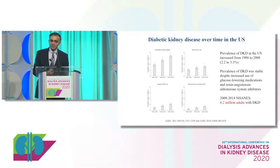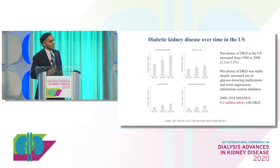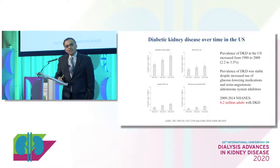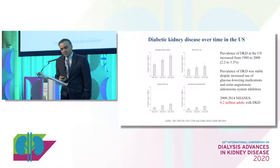Why do we need a guideline? In 2012, KDIGO issued a specific CKD guideline. But why do we need a specific diabetes and CKD guideline? This guideline is titled KDIGO Guidelines for Diabetes and CKD — not diabetic kidney disease, because not all CKD in diabetes is related to diabetes. The prevalence of DKD is about 2–3%, but in absolute numbers that's about 8.2 million adults, some with only albuminuria, some with impaired GFR alone, or a combination of both.